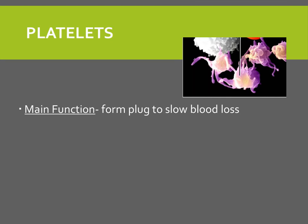The main function of platelets is to form a plug to slow blood loss. The hormone thrombopoietin stimulates the production of platelets. Myeloid stem cells develop into megakaryoblasts, and then megakaryoblasts turn into megakaryocytes. Megakaryocytes splinter off into two to three thousand different fragments — these create the platelets. They have many vesicles inside them containing blood clot promoting chemicals, but have no nucleus. They have a very short lifespan of about five to nine days.